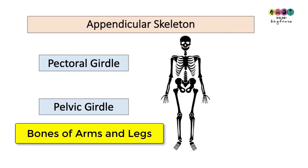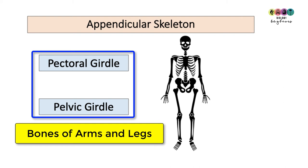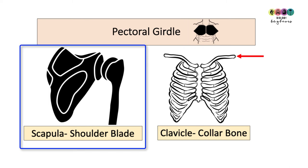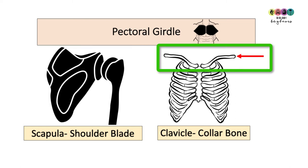Now on to the appendicular skeleton, which is made up of two girdles — the pectoral girdle and the pelvic girdle — and also the bones of the arms and the legs. The pectoral girdle — just think of your pecs. It is made up of your two scapulae, your two shoulder blades, and also your two clavicles, your two collarbones.